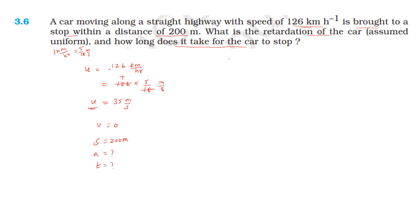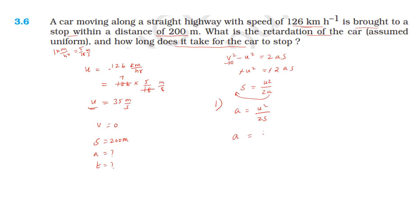Using the equation v² = u² + 2as, the retardation is equal to minus u² divided by 2s, which gives 3.0625, or to 3 significant figures, 3.06 meter per second squared.